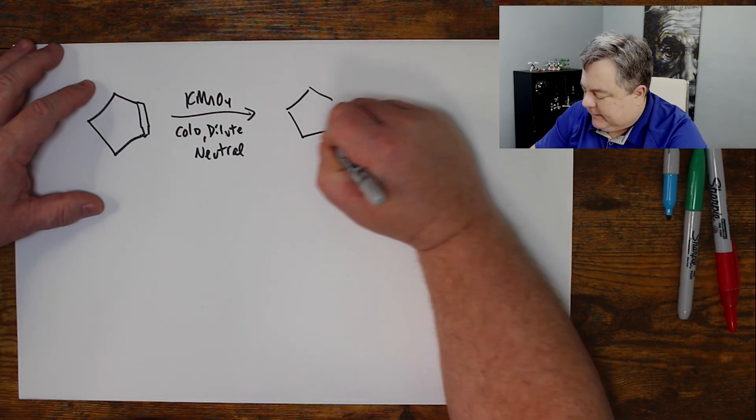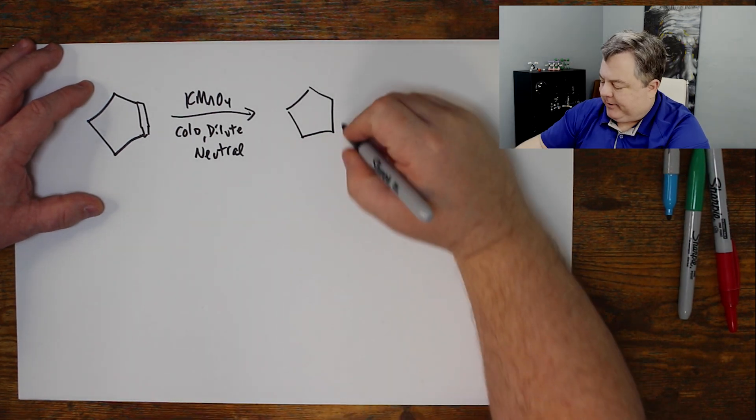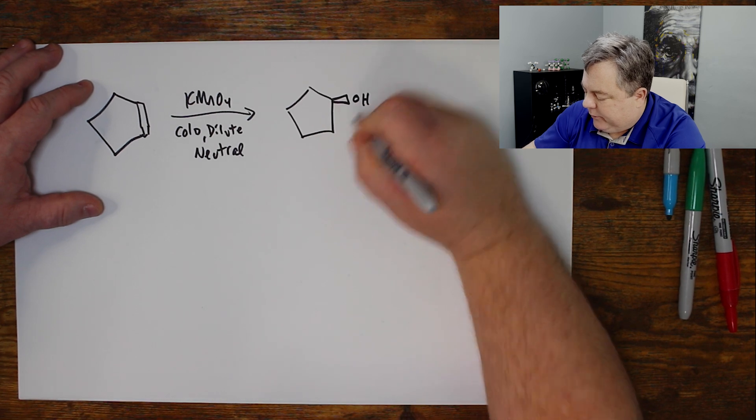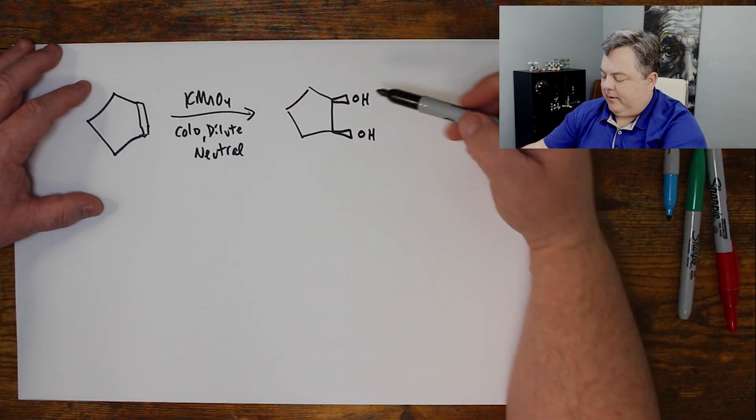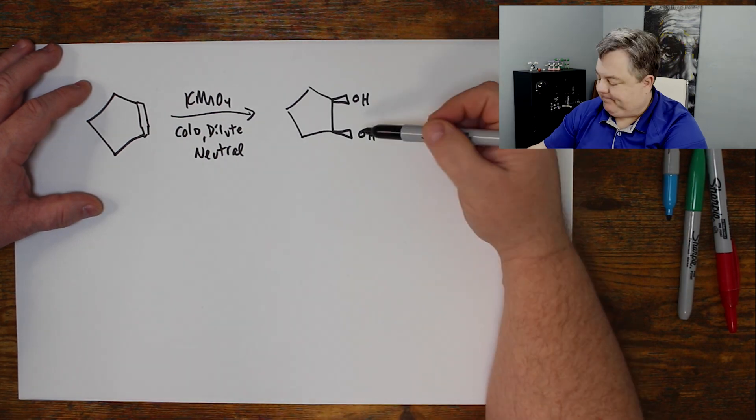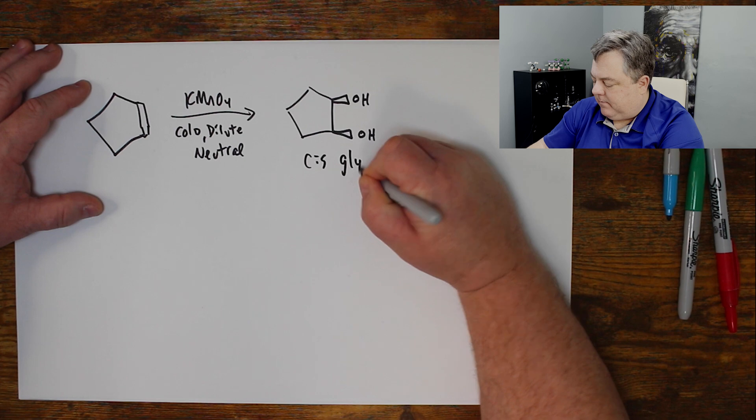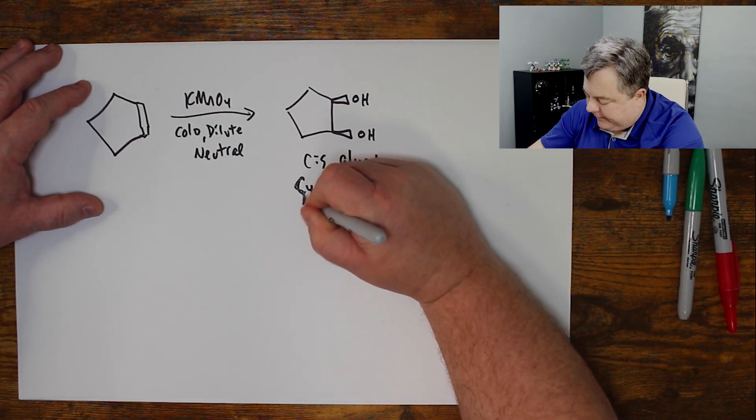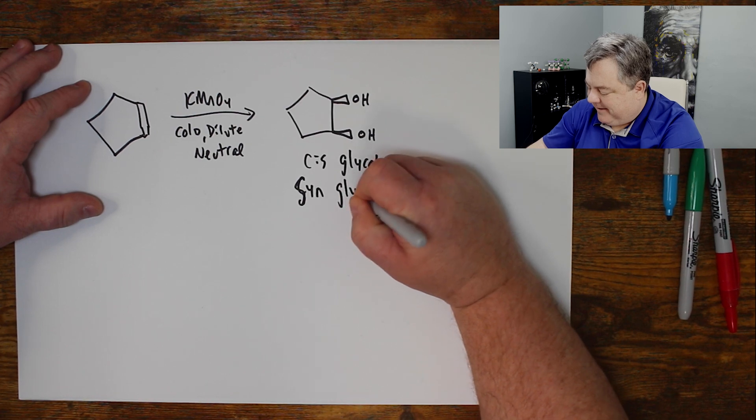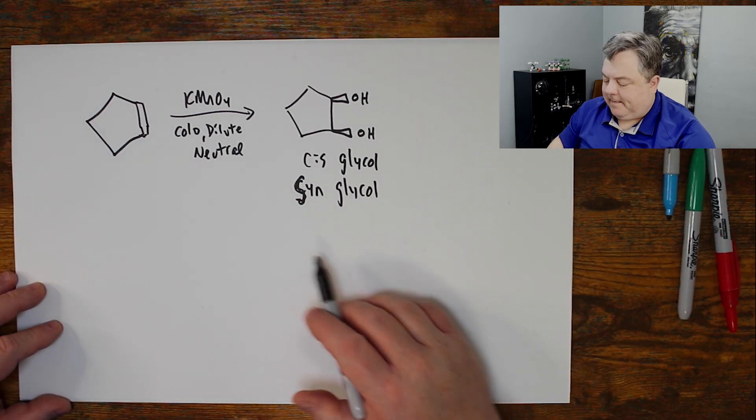We remember that my double bond gets the two oxygens at the same time. So it gets two OH groups, and they're on the same side of the ring because they have to come on at the same time. A cis-glycol, or a syn-glycol, S-Y-N. They go on at the same time on the same side.